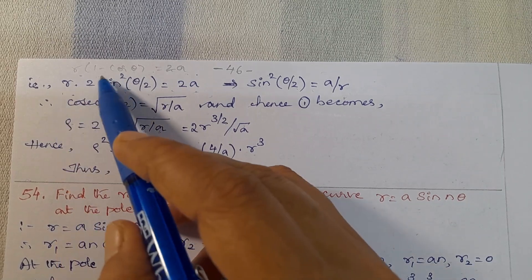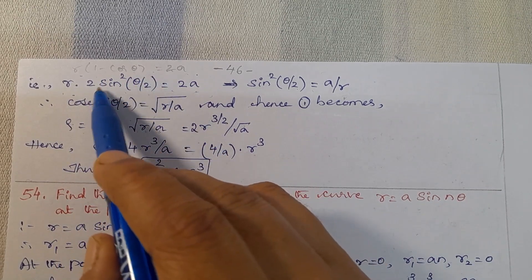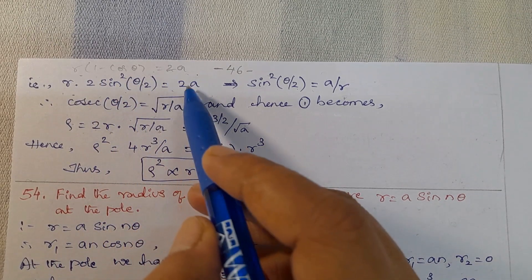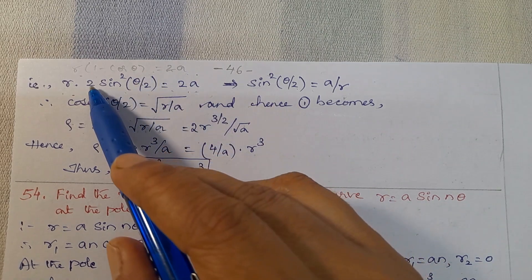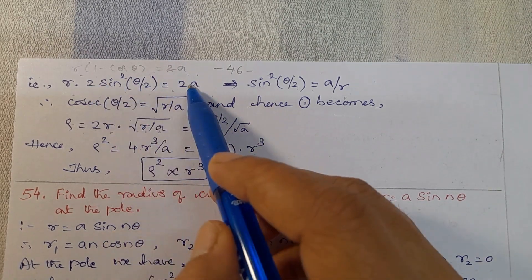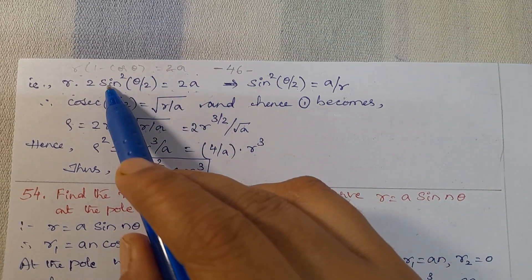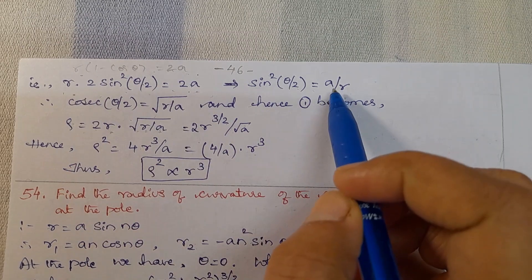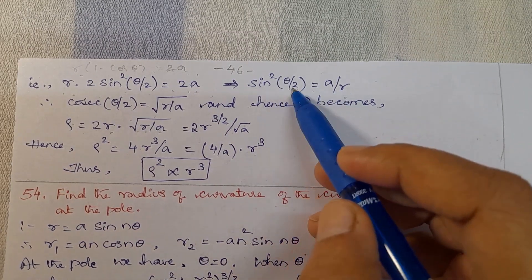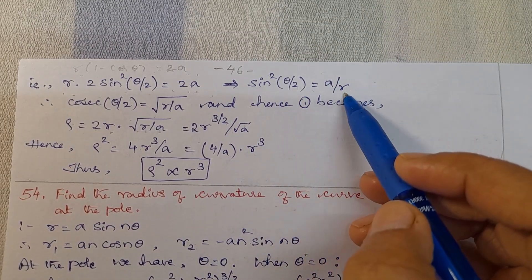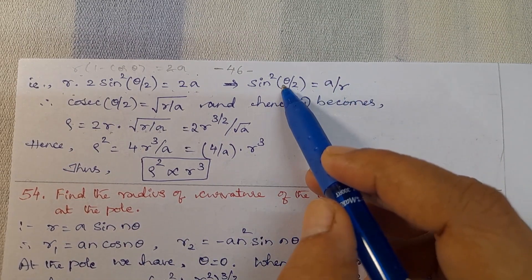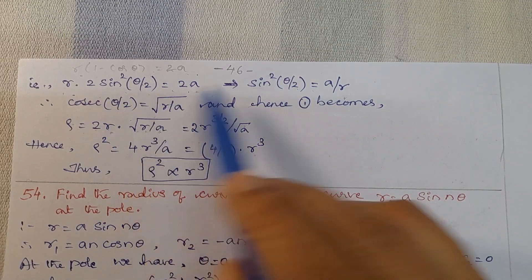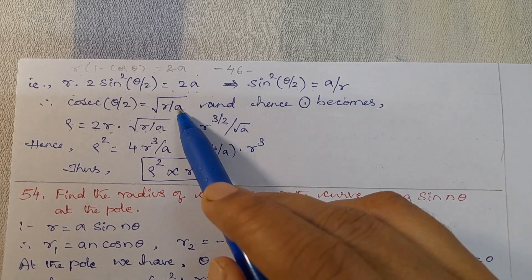From the curve: r(1 - cos θ) = 2a gives r × 2sin²(θ/2) = 2a, so sin²(θ/2) = a/r. Taking reciprocal: cosec²(θ/2) = r/a, thus cosec(θ/2) = √(r/a). Substituting into equation 1: ρ = 2r × √(r/a) = 2r^(3/2)/√a.